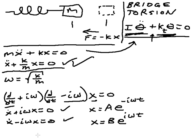And we can combine them. X total, I'll call it, equals a e to the negative i omega t plus b e to the positive i omega t.